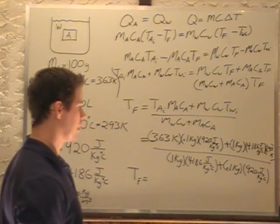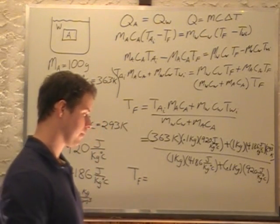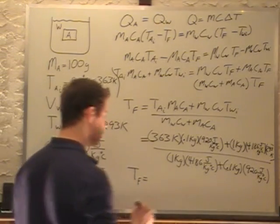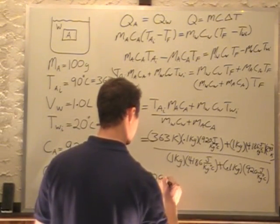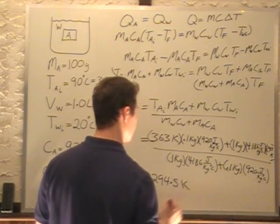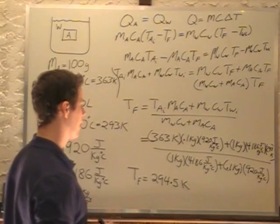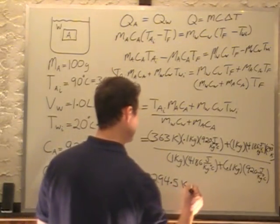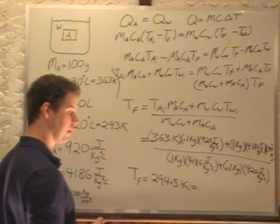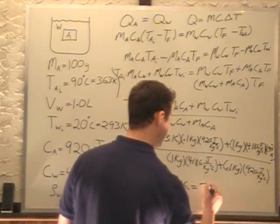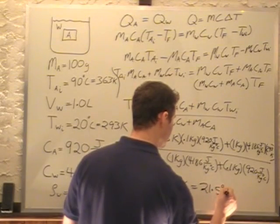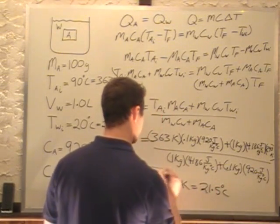Plugging all of this in, we get a final temperature of 294.5 Kelvin. That is equal to — subtracting 273 from that — 21.5 degrees Celsius. That's our final temperature and our final answer.